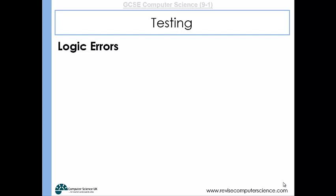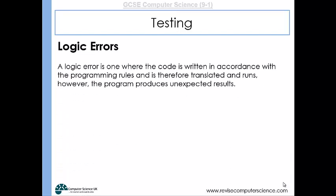So logic errors are another type of error. Now logic error is where the code is written according to the language but it still produces unexpected results. Or the program itself once it's been converted when run will produce unexpected results. And it's simply because there is an error in the logic of the program. It doesn't do what it should do.